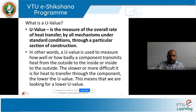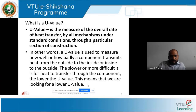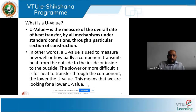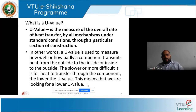In other words, U-value is used to measure how well or how badly a component transmits heat from outside to inside or inside to outside. The slower or more difficult it is for heat to transfer through the component, the lower the U-value. This means we are looking for a lower U-value. People in hot climates and even cold climates are looking for a lower U-value. It is only in moderate climates that you can go for a higher U-value. Lower U-value means less heat transfer; higher U-value means more heat transfer.